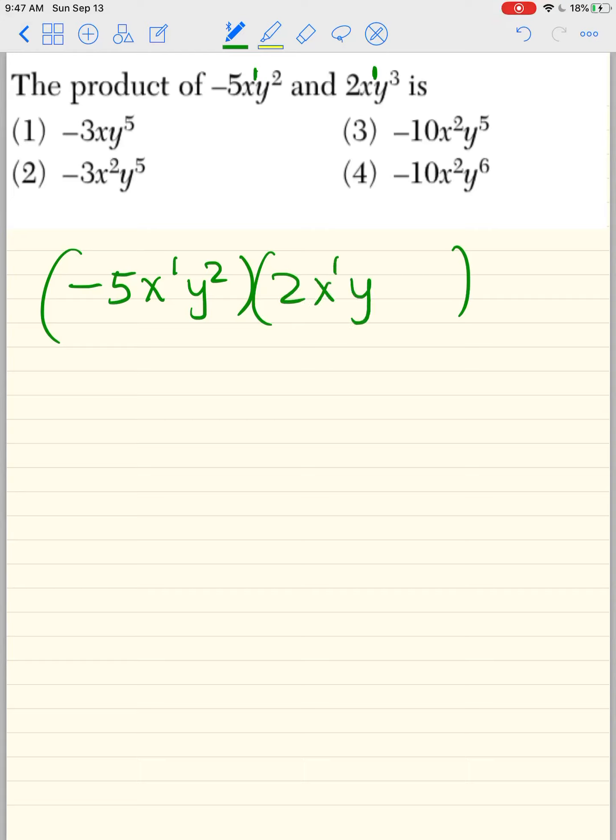So the product of this and this. So this is how we multiply a monomial and a monomial. Okay, a monomial with another monomial. So how do we do it again? We multiply the two numbers. That's -10. So we do the operation. So this is multiplication, product.